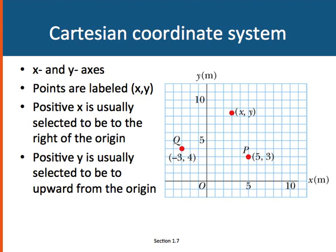If we look over off to the side, we see point P. P is (5, 3). That would give its x and y position. Positive x is usually selected to be to the right of the origin, and positive y is selected to be up from the origin.